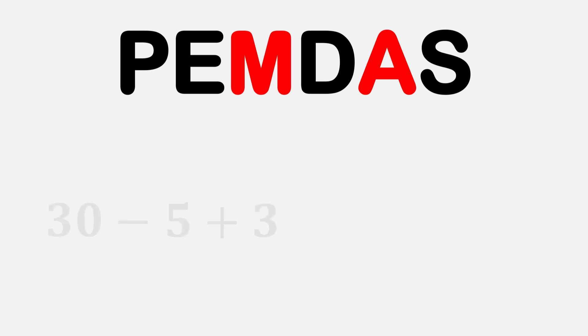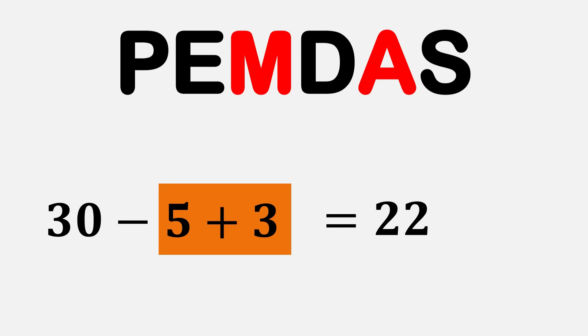Finally, the last step is Addition and Subtraction. Just like before, they are equal—you don't always add before you subtract. Again, you move from left to right and solve as you go. For example, take this one: 30 minus 5 plus 3. If you add 5 plus 3 first, you get 8, and then 30 minus 8 equals 22. But that's not how the rule works.